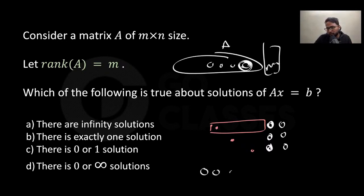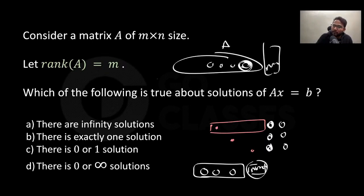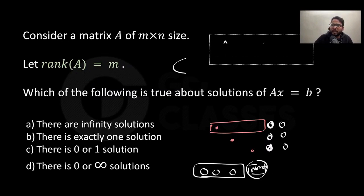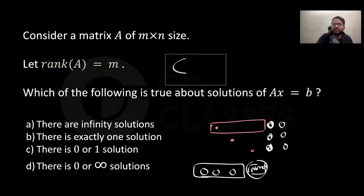Since zero-zero-zero is not even possible, there is always a solution. Whether it is infinite or unique depends on free variables — you can definitely have free variables here, since not every column needs to have a pivot. So either there are infinitely many solutions or a unique solution.